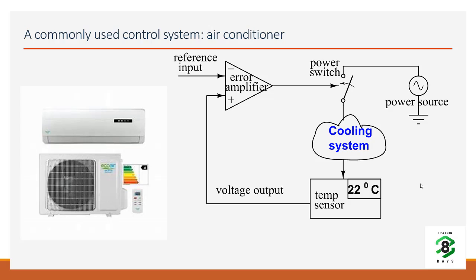So what we do is: there is a temperature sensor built into the air conditioner which measures the ambient temperature and gives a signal in terms of voltage. That voltage is the representation of the temperature, and it gets compared with the reference input. The reference input is also a voltage which comes from a different system — you set the temperature through the remote control as a number, and then that number gets converted to a voltage.